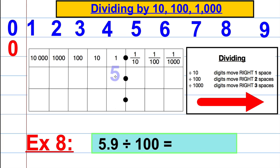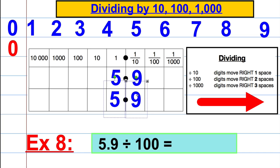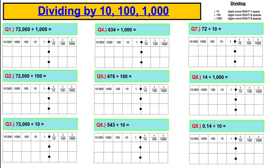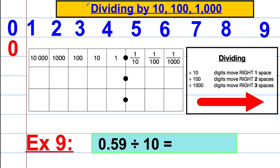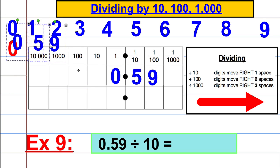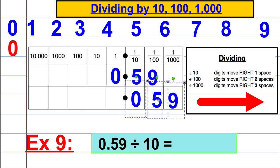For 5.9 ÷ 100: we have five ones and nine tenths, shift two spaces to the right, add placeholder zeros, and the answer is 0.059. Finally, 0.59 ÷ 10: we have five tenths and nine hundredths, shift one space to the right, add a placeholder zero, and the answer is 0.059.